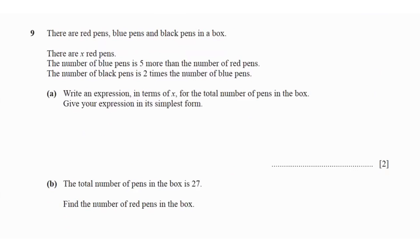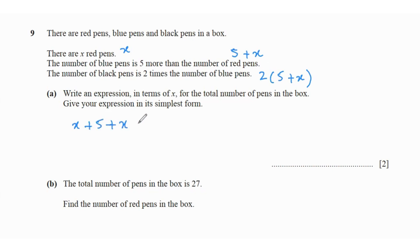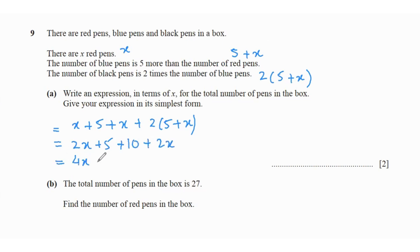Question 9: there are red, blue, and black pens. There are x red pens. Blue pens = x + 5. Black pens = 2(x + 5). For the total: x + (x + 5) + 2(x + 5) = 2x + 5 + 10 + 2x = 4x + 15. That is your expression for the total number of pens.